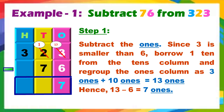Example: Subtract 76 from 323. The numbers are already arranged in the column method, so we must perform only subtraction. Step 1: Subtract the ones. Since 3 is smaller than 6, we can't take 6 from 3. So we borrow 1 ten from the tens column and regroup the ones column as 3 ones plus 10 ones equals 13 ones. As you know, 1 ten is equal to 10 ones. Hence, 13 ones minus 6 ones equals 7 ones.